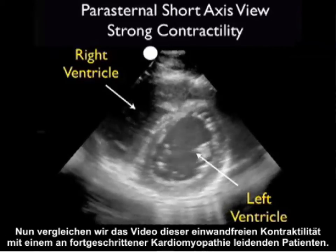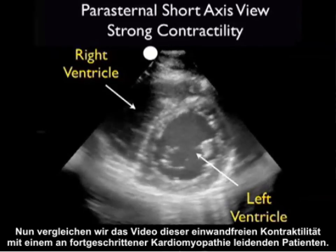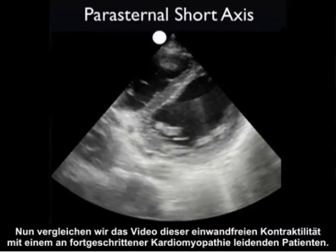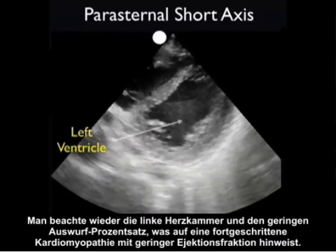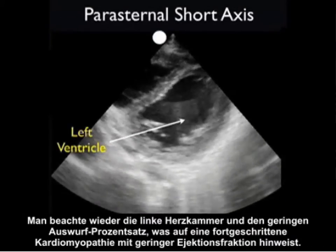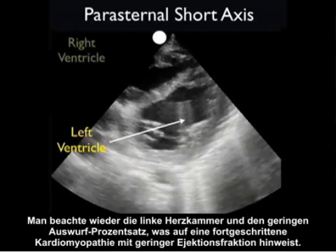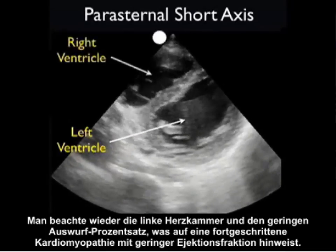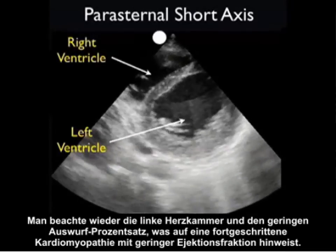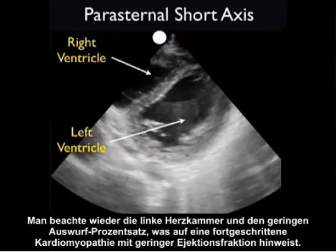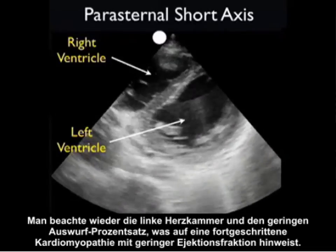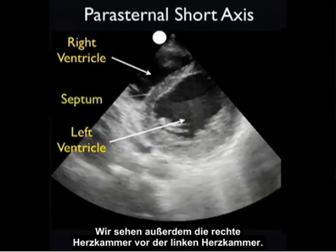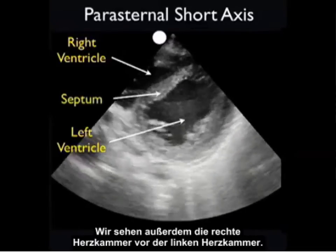Now let's contrast this with another patient who had an advanced cardiomyopathy. Note the left ventricle and the poor percentage change from diastole through systole, indicating an advanced cardiomyopathy with low ejection fraction. We can also see the right ventricle anterior to the left ventricle.